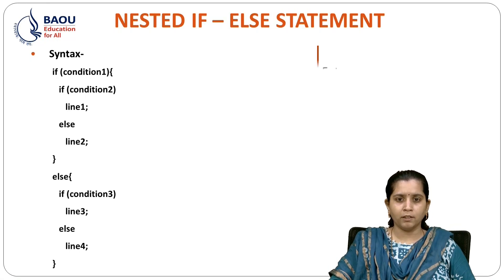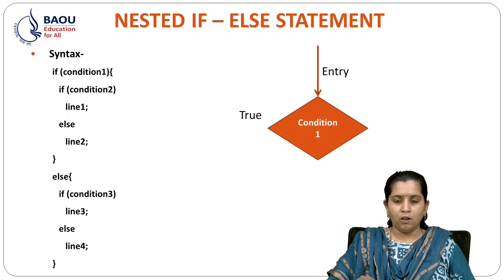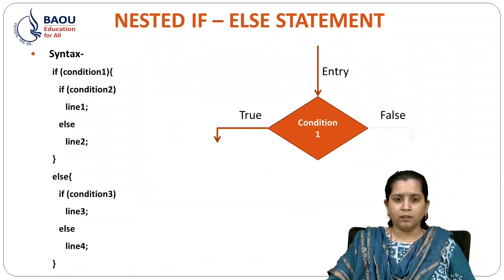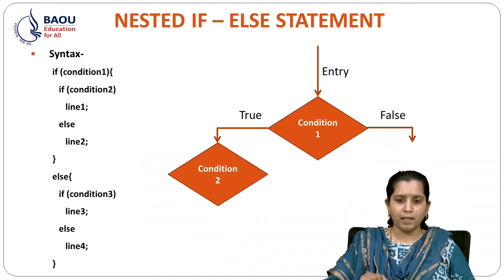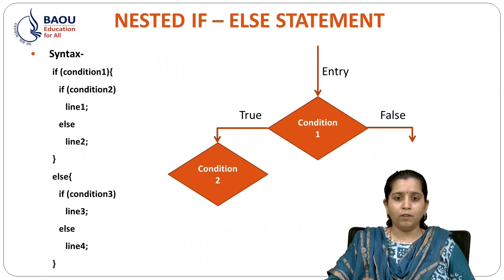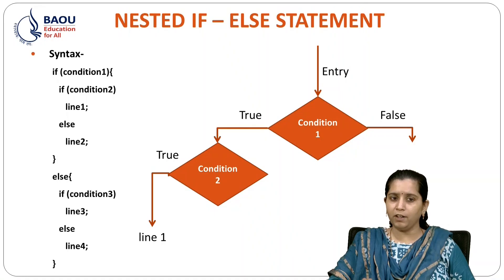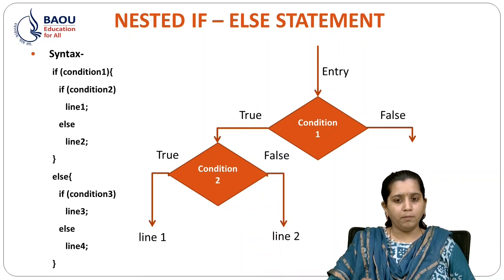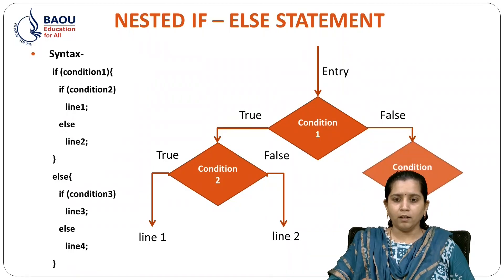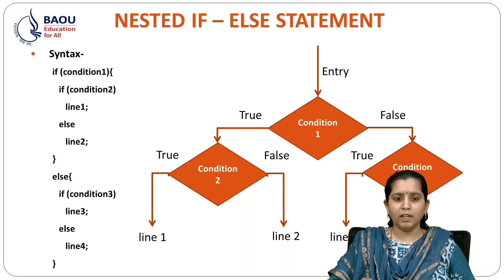In the flowchart of nested IF ELSE, first it will compare whether the condition is true or not. If it is true, then the true block is executed, and inside that we have another condition applied — if it is true, then line 1 will be executed; otherwise, line 2 will be executed. Simultaneously, in the FALSE block, that is in the ELSE block, if we write one condition — if it is true, then it will go in the IF block; and if it is false, then it will go in the ELSE block.